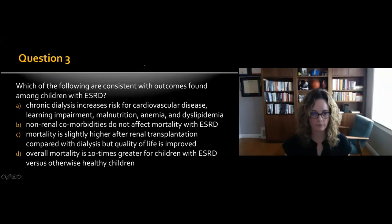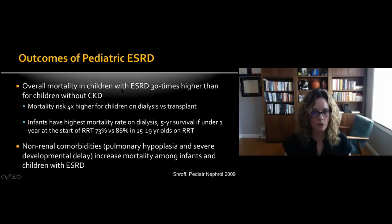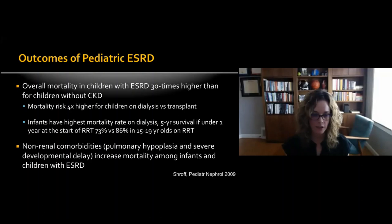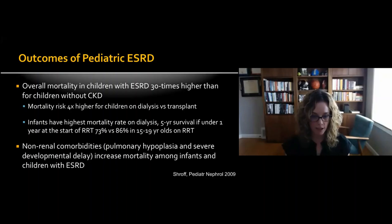Overall mortality in children with end-stage renal disease is 30 times higher than for children without CKD. There's a mortality risk of about four times higher on dialysis versus transplant. Infants actually have the highest mortality rate on dialysis. The five-year survival starting renal replacement therapy at less than one year of age is 73%, compared with 86% for 15-to-9 year olds on renal replacement therapy. Non-renal comorbidities such as pulmonary hypoplasia and developmental delay significantly increase mortality among infants and children with ESRD.